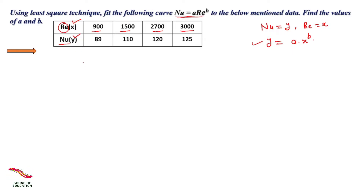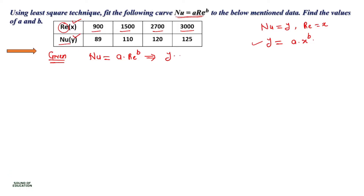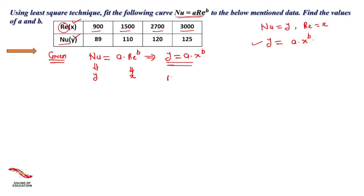Now, writing down the given values: the equation is Nu = a * Re^b, which we write in the form y = a*x^b, because Nu = y and Re = x. The value of n is also given — n = 4, as there are 4 total data points. Now, convert this equation into a straight line equation by taking log to both sides.